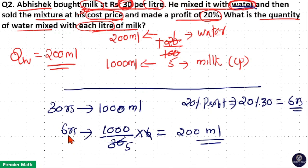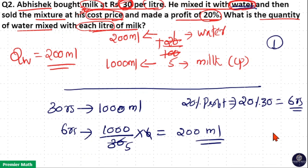So 6 rupees is the profit generated, meaning the profit denotes the amount of water — 200 ml is the amount of water added to 1 litre of milk. You can do this question in either way.